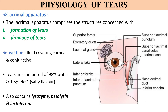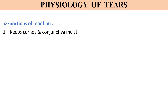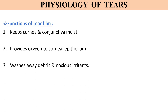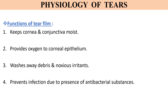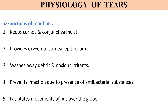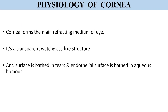Tears also contain antibacterial substances like lysozyme, beta-lysine, and lactoferrin. The functions of the tear film are: it keeps the cornea and conjunctiva moist, it provides oxygen to the corneal epithelium, it washes away debris and other noxious irritants, and it prevents infection of the eye due to the presence of antibacterial substances. It also facilitates the movements of the lids over the globe.